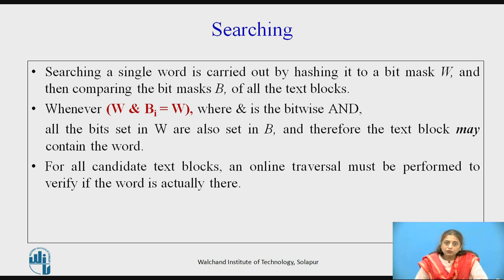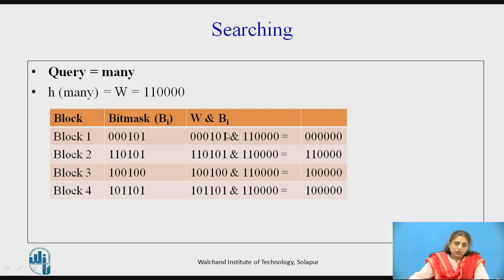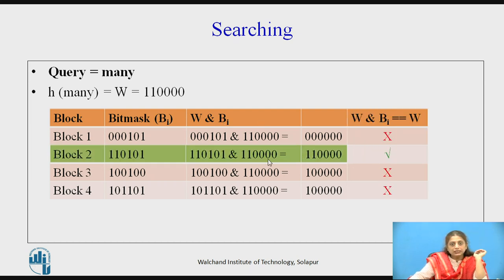All the text blocks where this condition is found true — we are going to do actual searching to find whether the word is present or not. Take this example: our query is 'many'. First find out the bit mask for the query word, which is 110000. In the next step we do the ANDing operation of this mask with the bit mask of every block and get the result. Only the second block gets the same signature as the query, meaning our word may be present in the second block. So we do actual sequential searching in the second block, and in our example 'many' is indeed present in the second block.